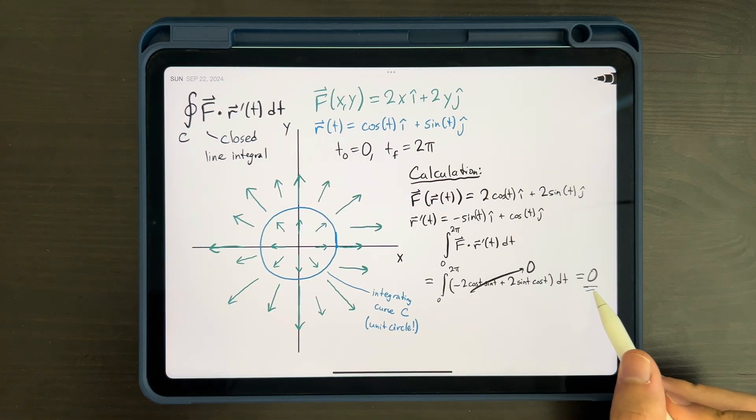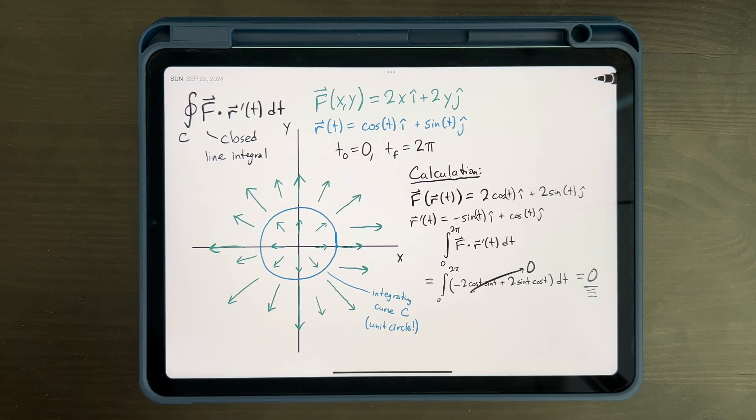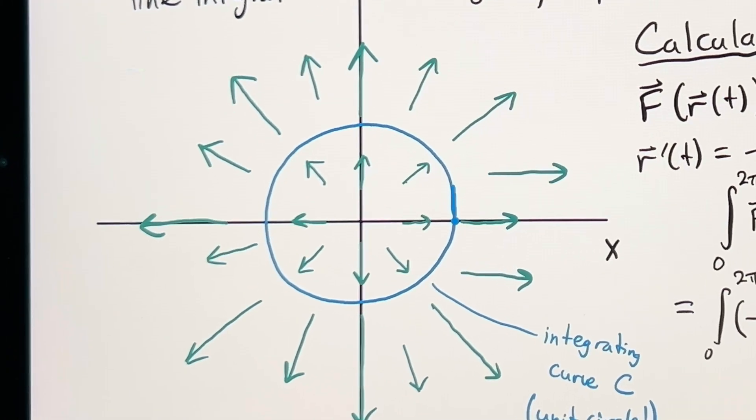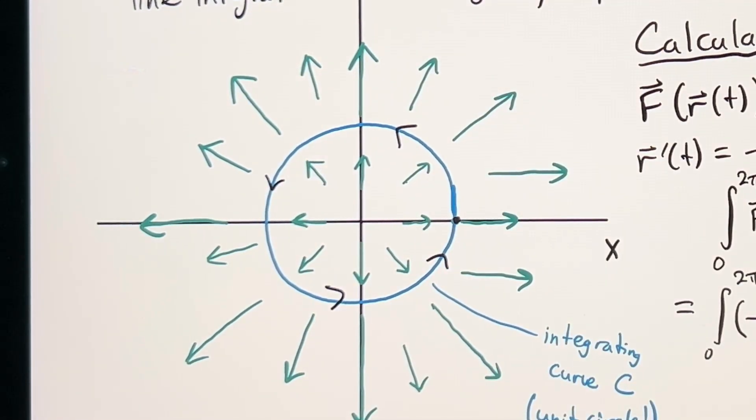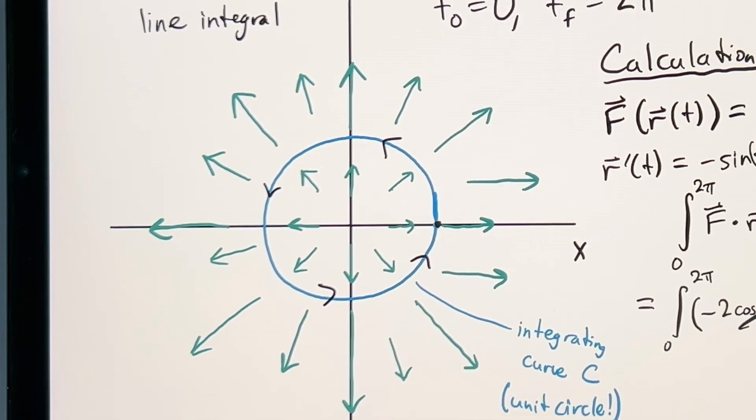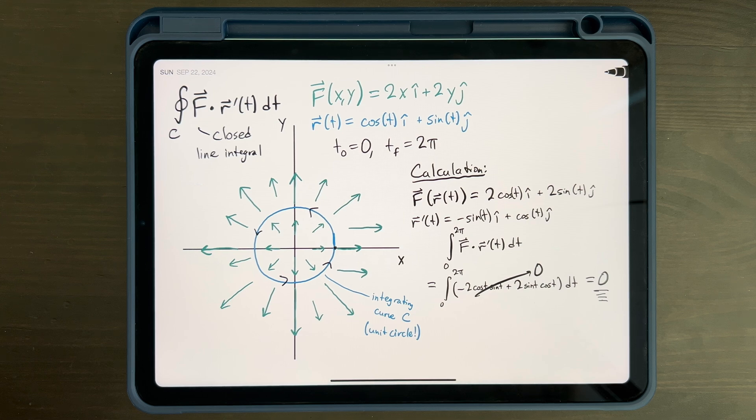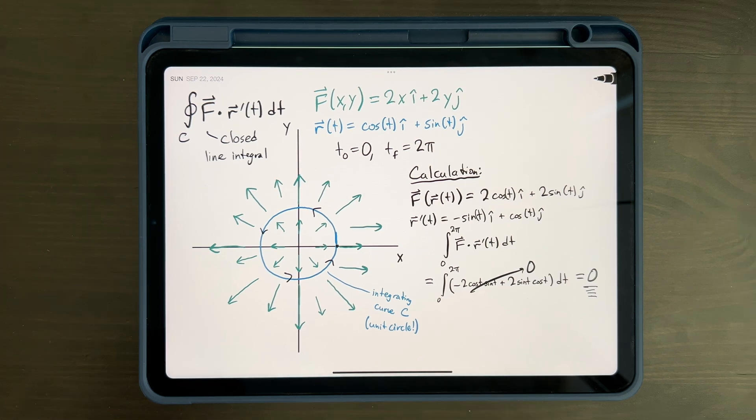Interestingly, we end up with a 0. Intuitively, you might think this actually makes sense. Our integrating curve starts and ends at the same point, so it doesn't move us anywhere through the vector field. So, of course the line integral will be 0. But this doesn't actually capture the whole picture. The line integral over this curve isn't going to be 0 for every possible vector field.